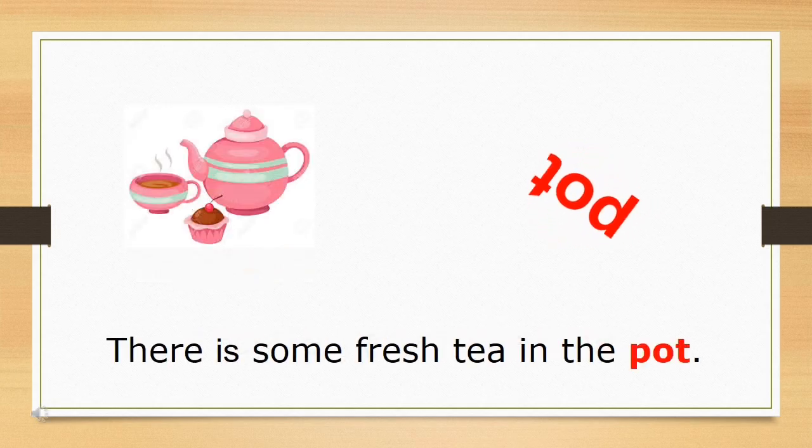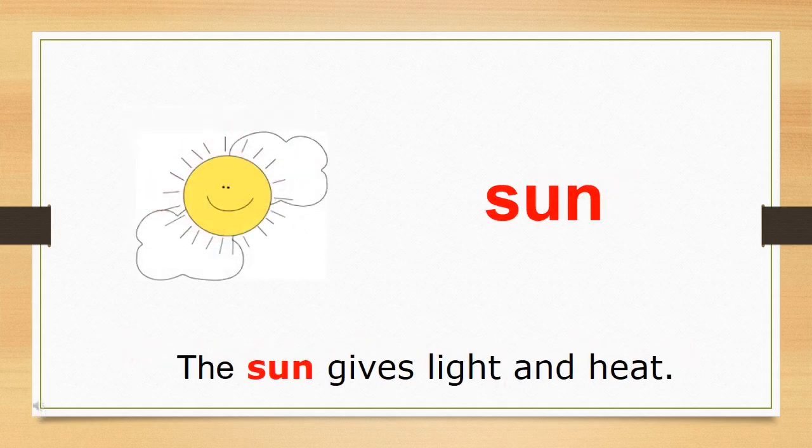And the word is pot. Children, the meaning of pot is a vessel or a container. Yes, in which we keep some liquid thing. For example, here you can see a teapot in the picture. So, let's use pot in sentence. There is some fresh tea in the pot.